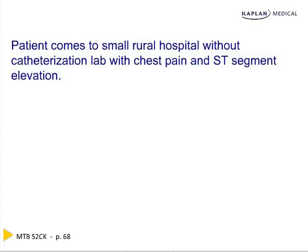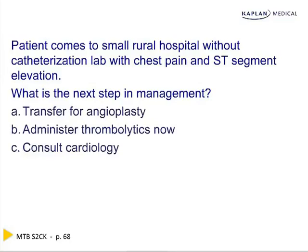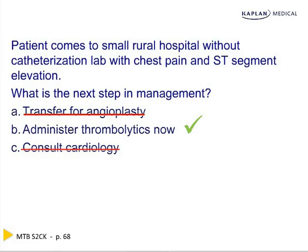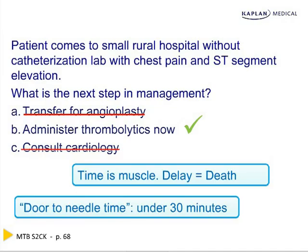Questions will explicitly state you're in a small rural hospital with no cath lab — it's not guesswork. With chest pain and ST elevation, thrombolytics now is better than angioplasty three or four hours from now. Don't consult cardiology first — even the phone call delays medication administration. Time is muscle; delay equals death. Door-to-needle: thrombolytics must be in the vein within 30 minutes of arriving at the ER, as long as it's within 12 hours of the onset of chest pain.